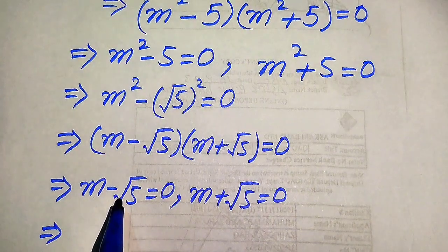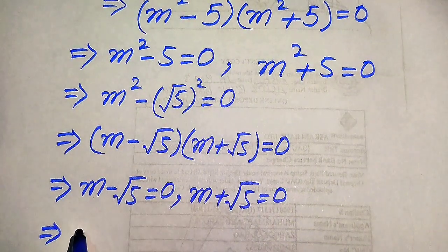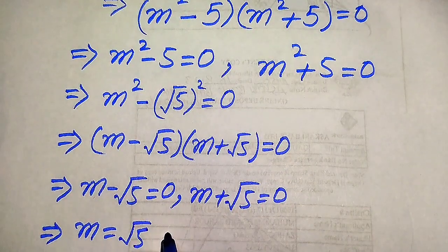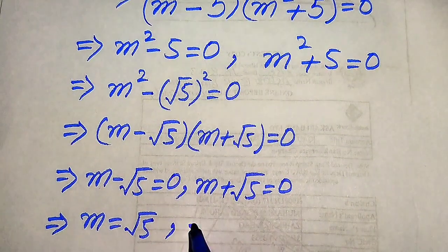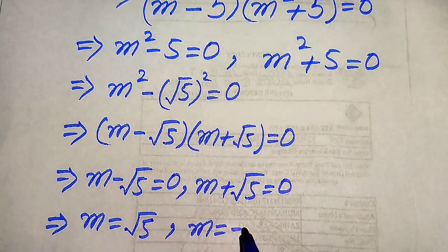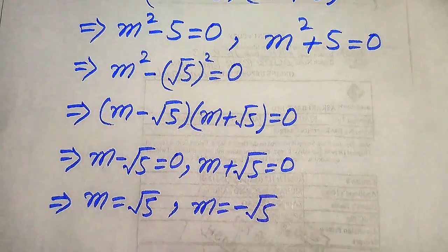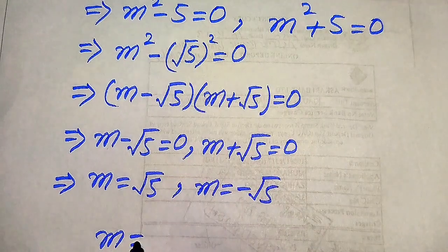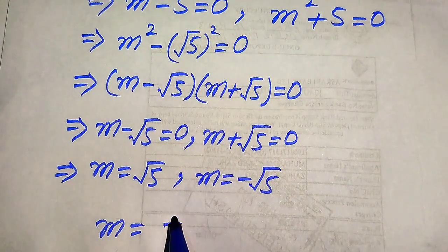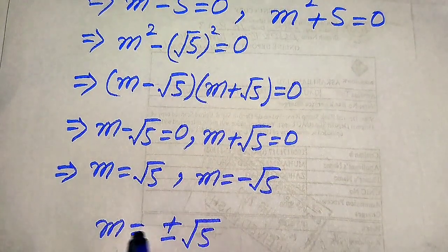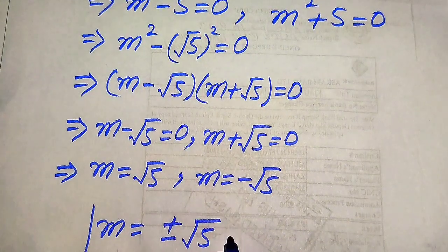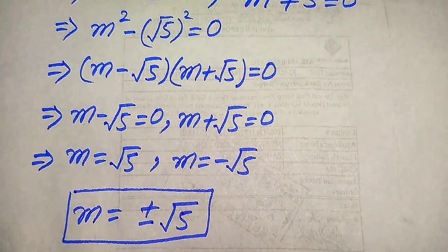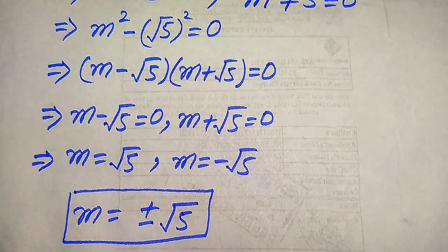We break this into two sub-cases: m minus square root of 5 equals 0, and m plus square root of 5 equals 0. Moving the terms to the right hand side, we get m equals square root of 5 and m equals negative square root of 5. So from this case we get two real roots: m equals plus or minus square root of 5.